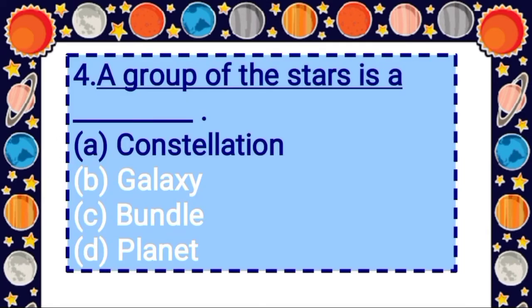Next question: a group of stars is a dash. Option A: constellation, Option B: galaxy, Option C: bundle, Option D: planet. Answer is option A, constellation — a group of stars is a constellation.